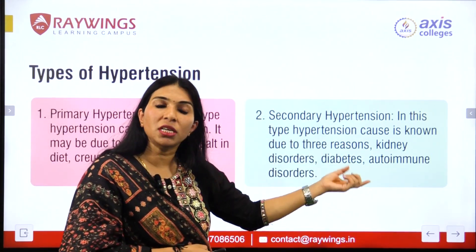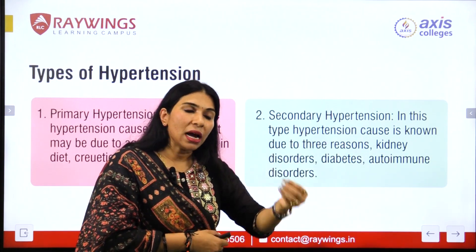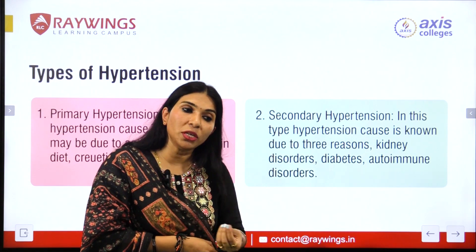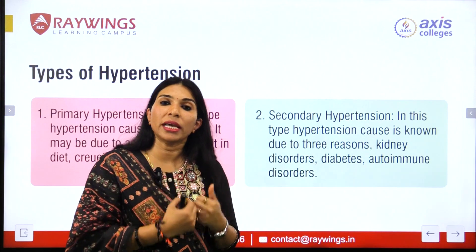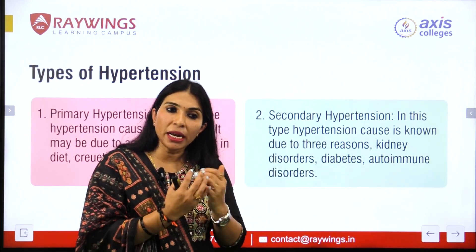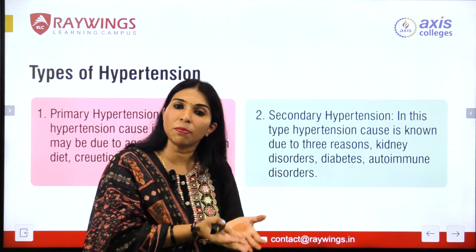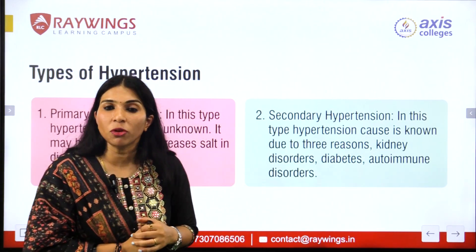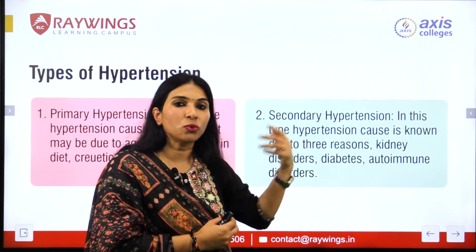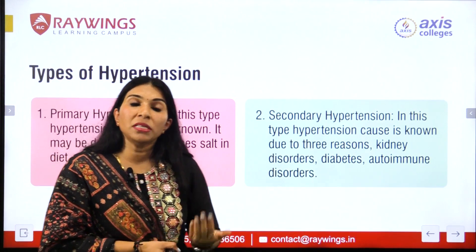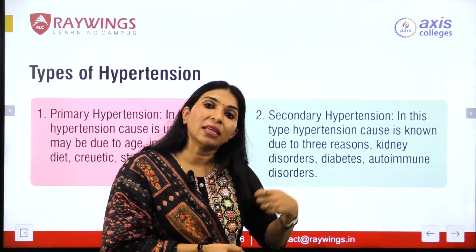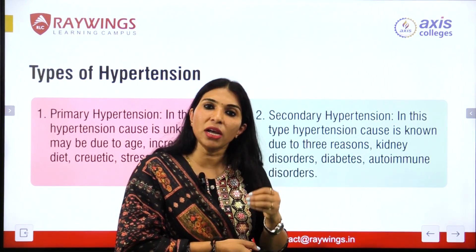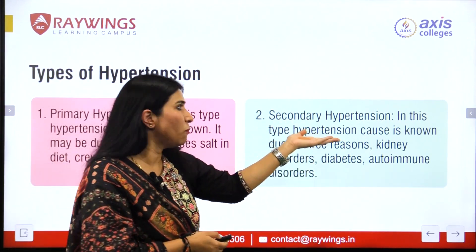In secondary hypertension, we are aware of the reason. For example, when a person suffers from renal impairment or kidney failure, the blood pressure automatically increases. The kidney is the main excretory organ, and when it fails to eliminate waste, that waste accumulates in the body, increasing blood volume and pressure on vessels. Similarly, diabetes can lead to renal impairment and raise blood pressure. Autoimmune disorders where the immune system is not working properly can also increase hypertension. Because we are aware of the reason, it is called secondary hypertension, affecting only 5 to 10% of the population.